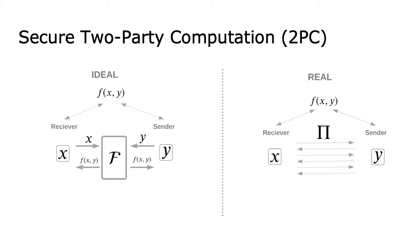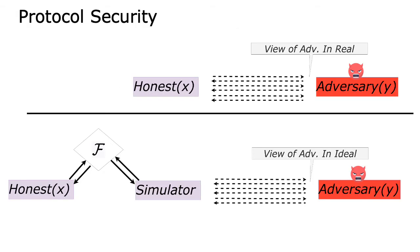But in the real world, such a trusted third party does not exist, and therefore the parties emulate the trusted third party through a protocol. In this presentation, the party that gets the output is called a receiver and the other party is called a sender. For protocols in which both parties get the output, the party that obtains the output first is the receiver and the party that gets the output second is the sender. Proving the security of the protocol requires establishing the existence of a simulator that interacts with the ideal functionality and with the adversary to output an adversarial view that is indistinguishable from the adversary's view in the real world, where the adversary interacts with the honest party.